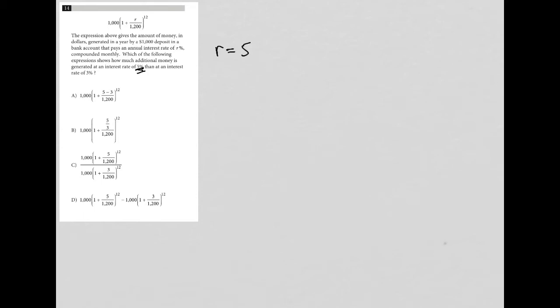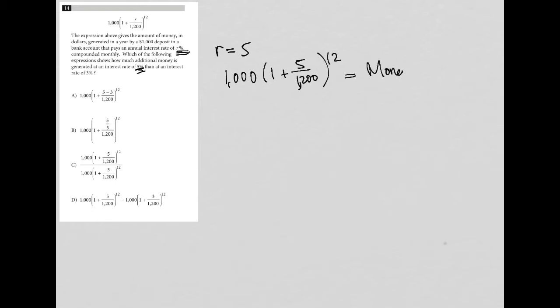How do we figure that out? If I were finding the amount of money I'd make at 5%, I just replace R. R would equal 5, because R percent. So R equals 5, which means the expression would say 1,000 times 1 plus 5 over 1,200 to the 12th power. This would equal money at 5%.